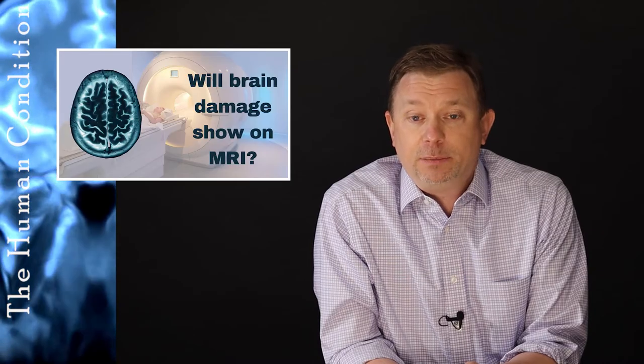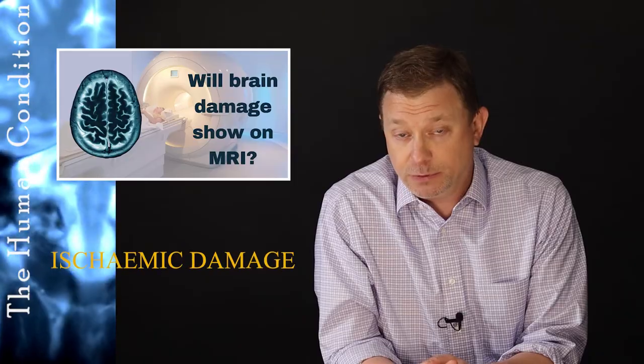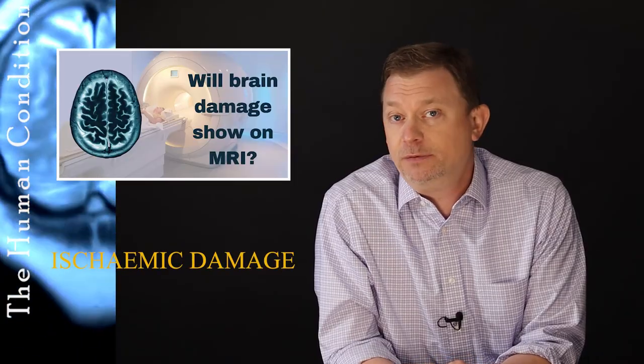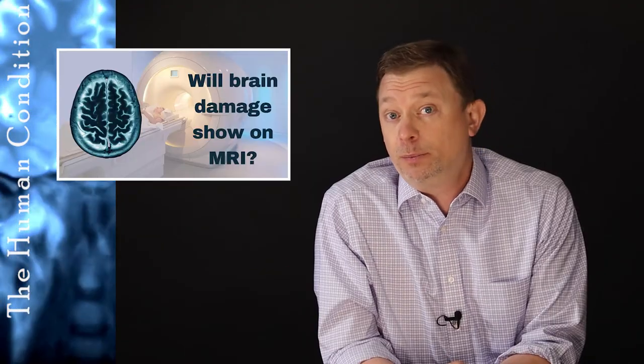The further piece about damage showing on an MRI is if you have ischemic damage, which means your brain is not dead, but you have areas of reduced blood flow or altered blood flow, those show up really, really well on QEEG.